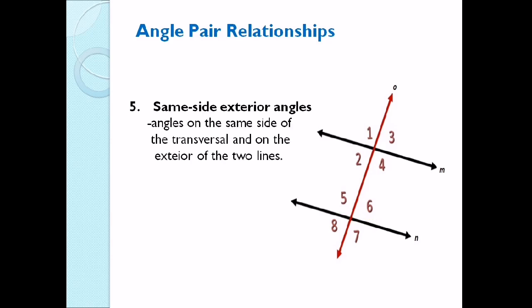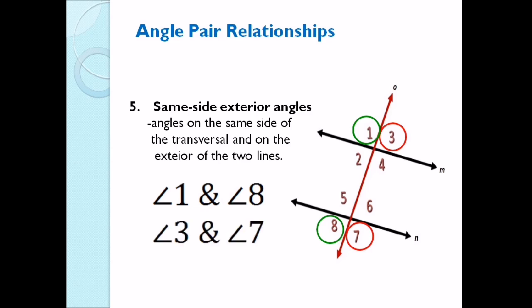Number 5: We also have same side exterior angles — the opposite of same side interior. These are on the exterior of the two lines. We have angle 1 and angle 8, and angle 3 and angle 7. Those are the same side exterior angles.